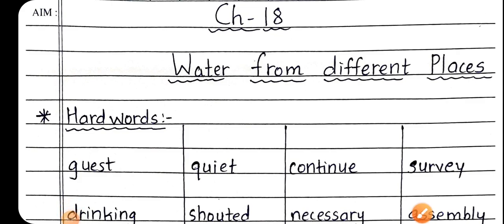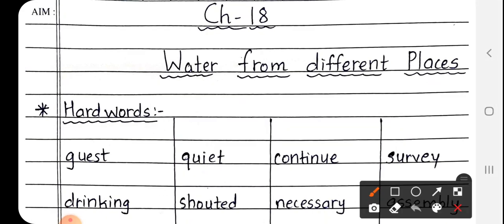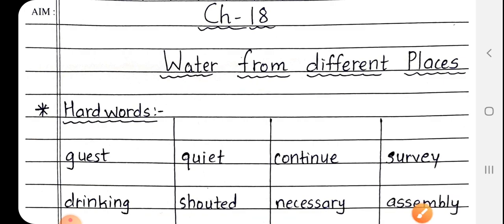Hello students, good morning. Standard 4th subject EVS. Students, today we will see the hard words of chapter number 18, Water from Different Places. Okay students, so let's get started.